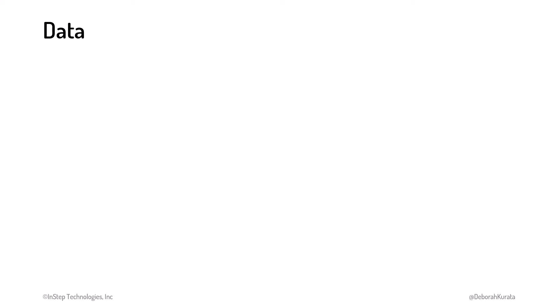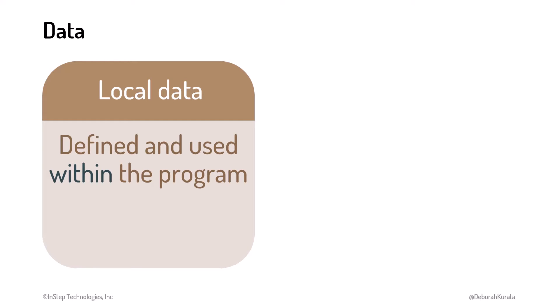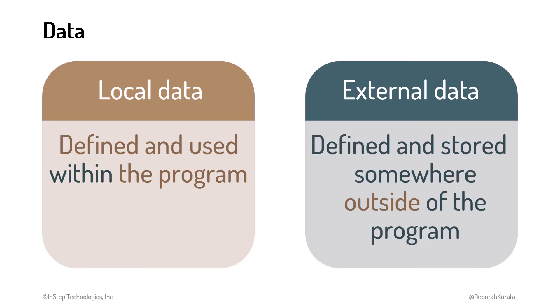As developers, we often work with two kinds of data. Local data, which is defined and used only within the program, and external data, which is defined and stored somewhere outside of the program. For example, external data may reside on another computer somewhere, so it can be shared between programs and users.